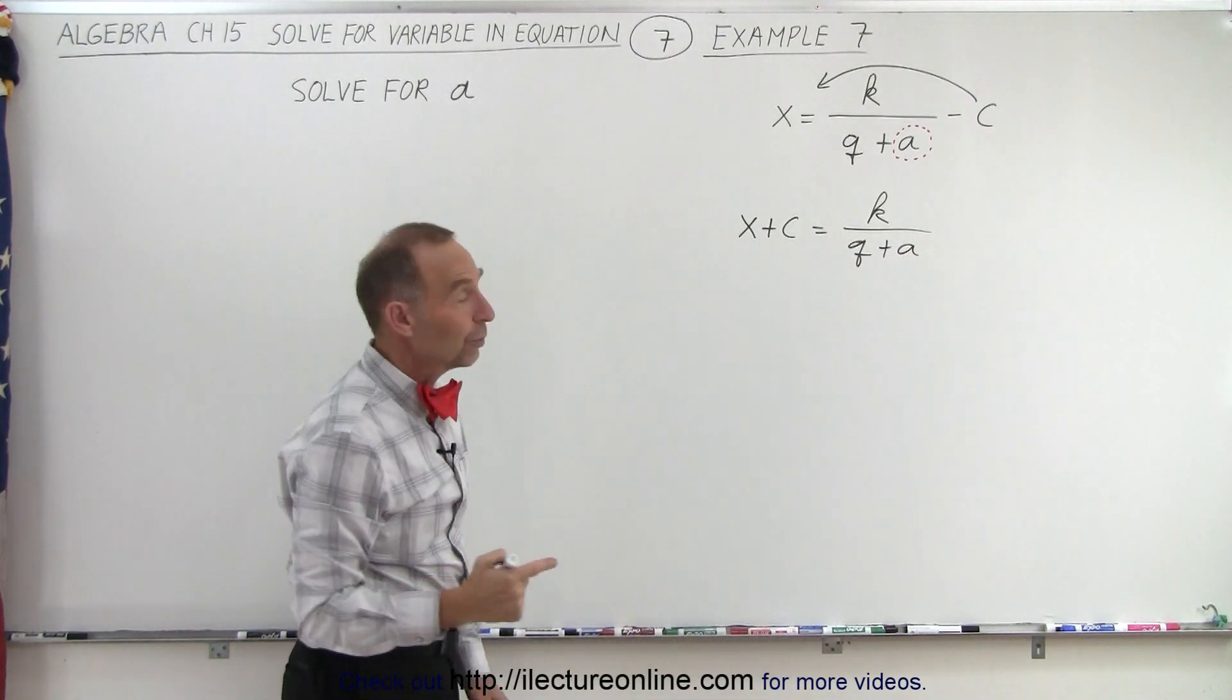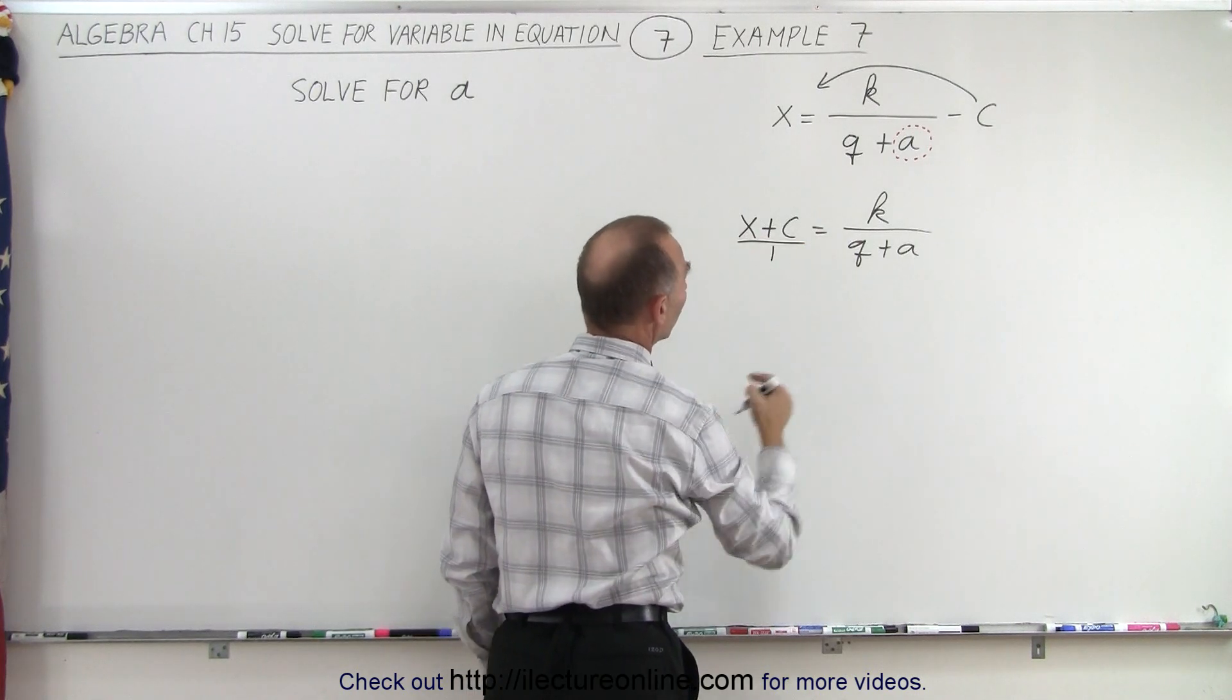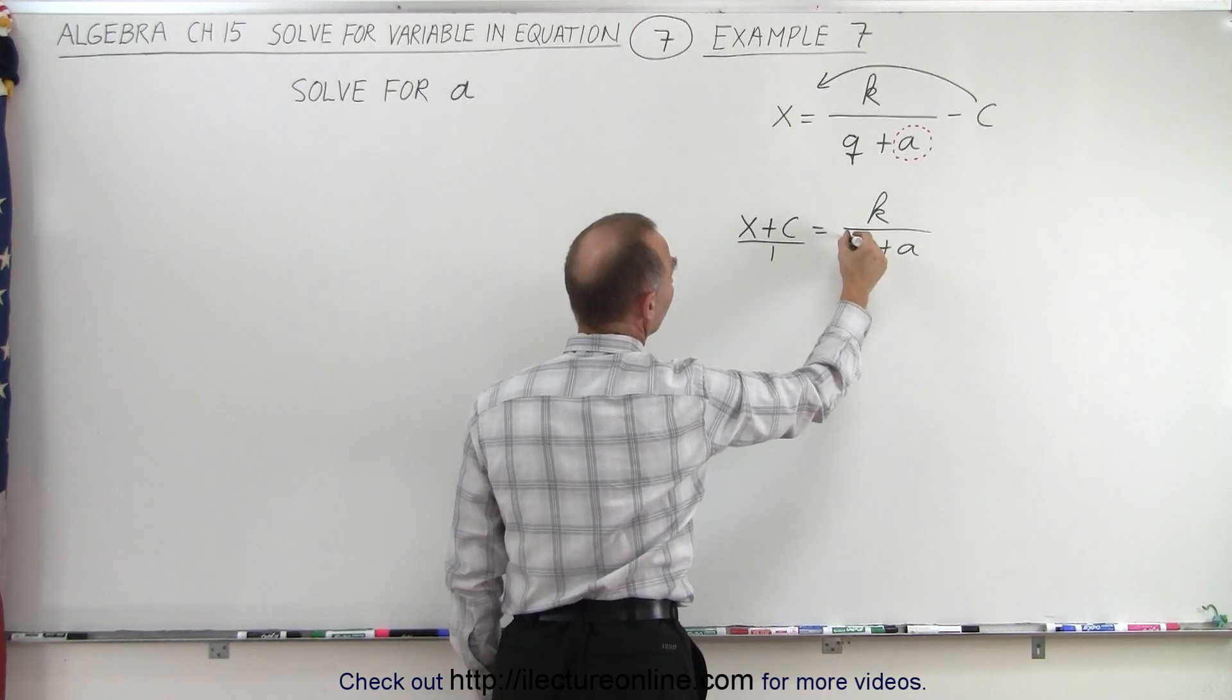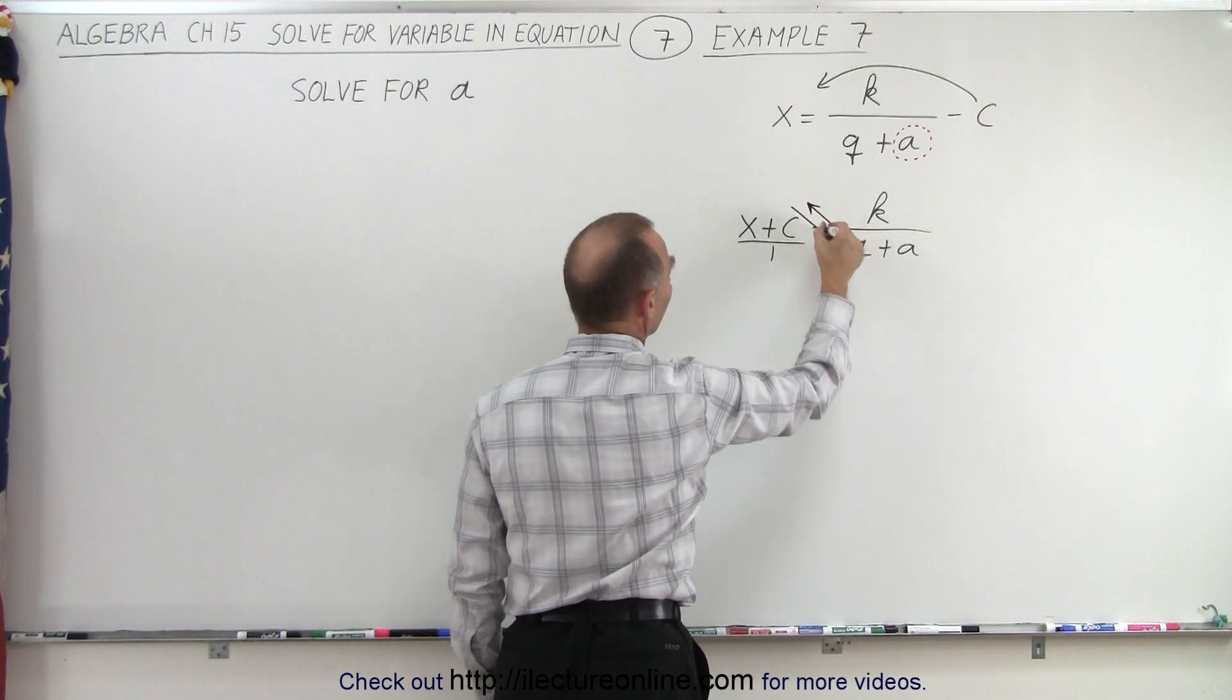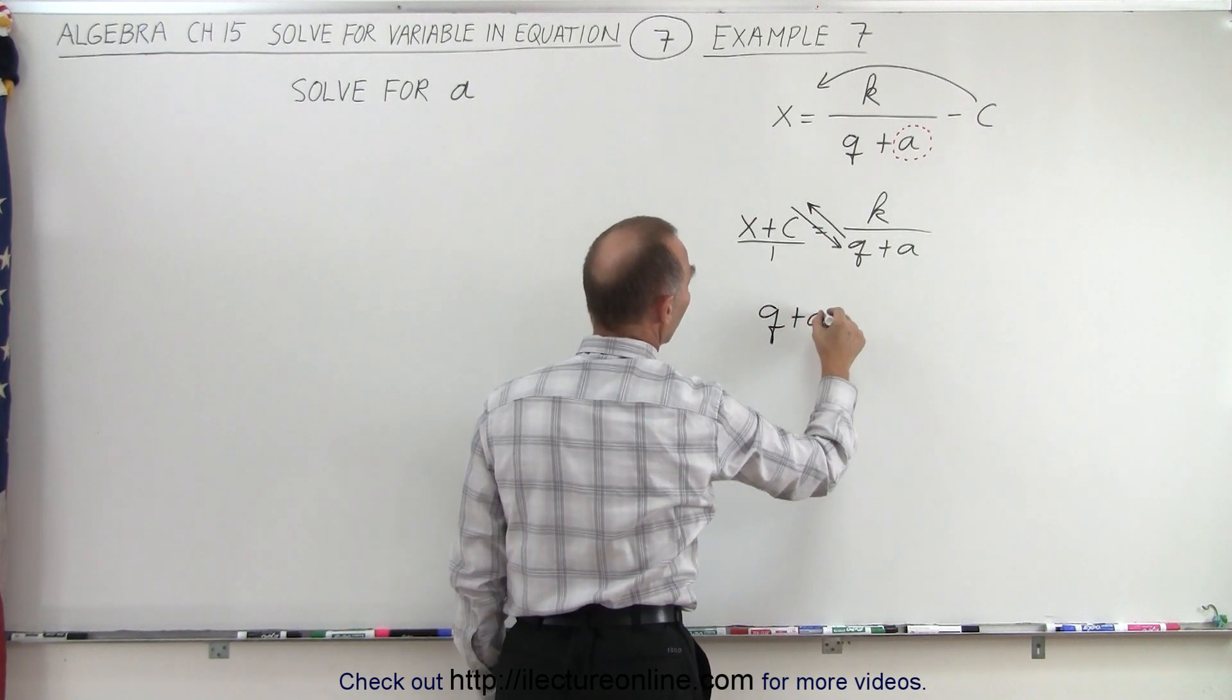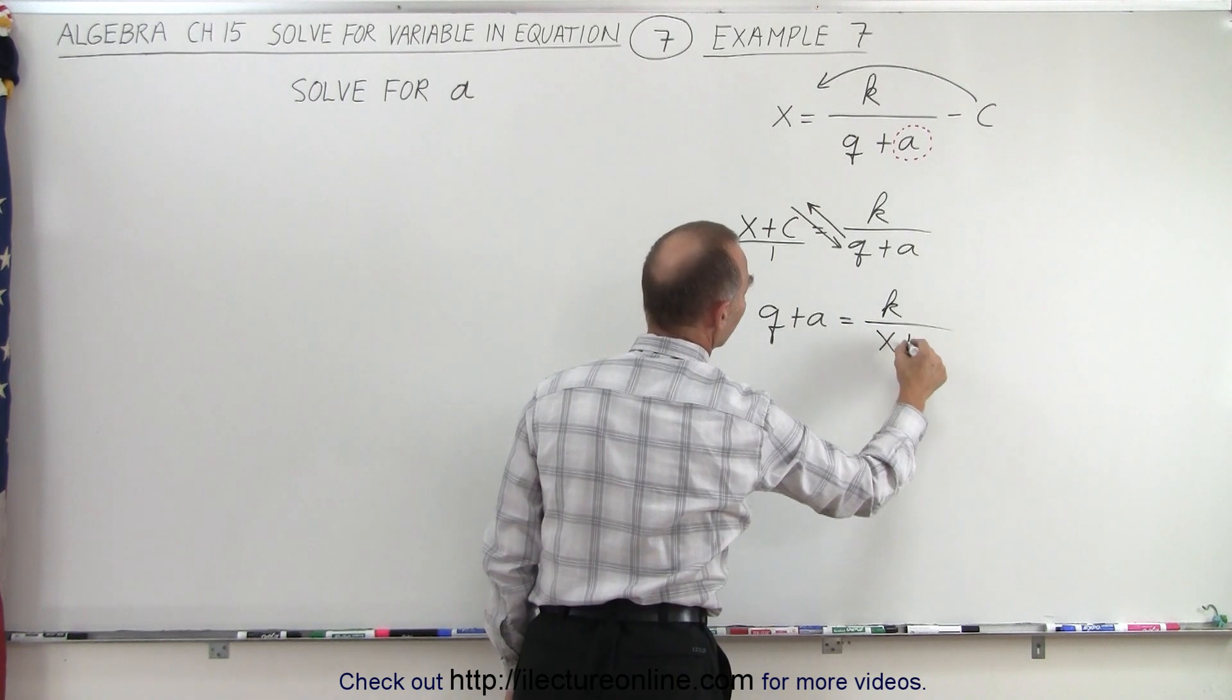Now we can cross multiply. If we think about this being X plus C over 1, we can move things across the diagonal. Q plus A can move to here and X plus C can move down. So we end up with Q plus A equals K divided by X plus C.